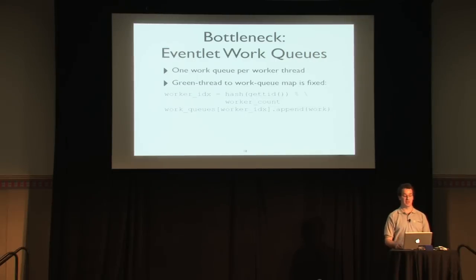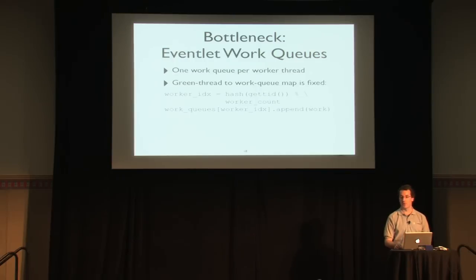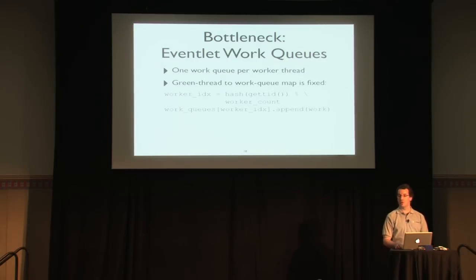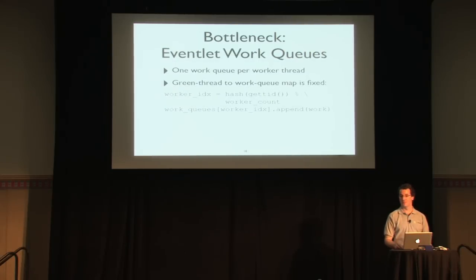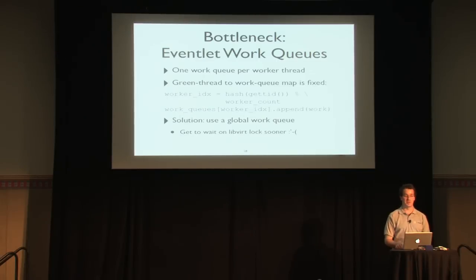It turns out that in Eventlet there's one work queue per worker thread. With 20 native worker threads there are 20 work queues, and the correspondence between a green thread and a work queue is fixed — it's a hash function of the green thread's ID modulo the worker count. The problem: two green threads can hash to the same work queue. The probability of a collision between two threads is 1 in 20, which is actually pretty high. The second thread's work won't start until the first thread's work is finished.